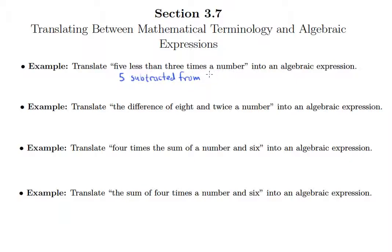Then "three times a number." I like times still. So times, and then instead of a number, the fact that they're saying "a number" means we don't know what the number is, and so we're going to use a variable there. So 5 subtracted from 3 times x.